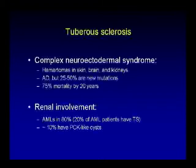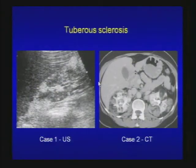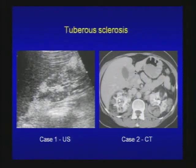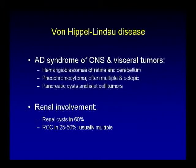Let's talk about syndromes involving the kidneys. Tuberous sclerosis is a complex neuroectodermal syndrome with hamartomas in the skin, brain, and kidneys. In terms of renal involvement, angiomyolipoma occurs in 80% of cases, and 20% of patients with AML have tuberous sclerosis; 10% have simple cysts. Here are two cases: ultrasound showing multiple echogenic masses in the kidney, and CT with bilateral fatty-containing masses consistent with multiple angiomyolipomas in tuberous sclerosis.